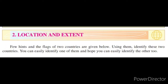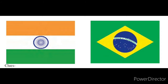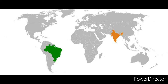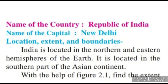Hello students, today we are starting with the subject of geography, specifically chapter two: Location and Extent. In this chapter we will learn about the location and extent of two countries — first is India and second is Brazil. Location means where the country is situated when we compare it to the world map, and extent means how far the country's reach spreads.